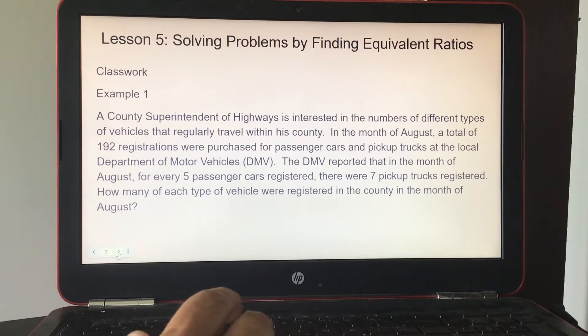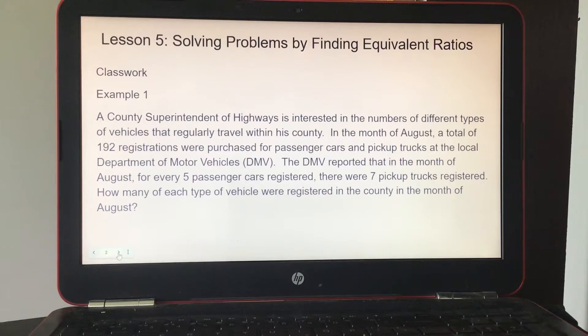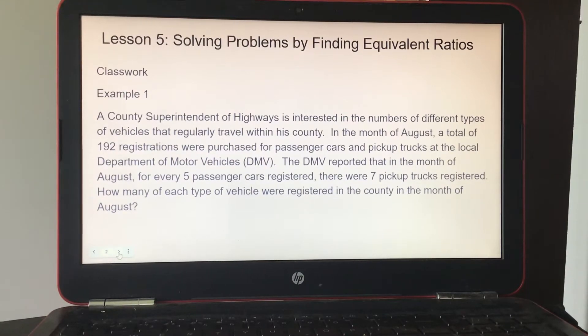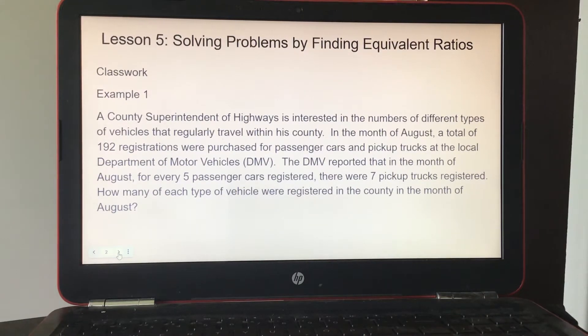Solving problems by finding equivalent ratios, classwork. Example 1. A county superintendent of highways is interested in the number of types of vehicles that regularly travel within his county. In the month of August, a total of 192 registrations were purchased for passenger cars and pickup trucks at the local Department of Motor Vehicles, DMV. The DMV reported that in the month of August, for every 5 passenger cars registered, there were 7 pickup trucks registered. How many of each type of vehicle were registered in the county in the month of August?